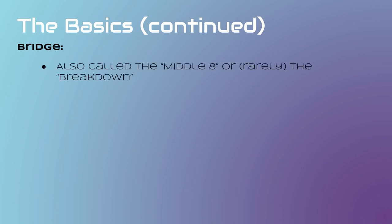The third and final basic song segment that we'll cover is the bridge. It is also sometimes called the middle eight, meaning eight bars that appear in the middle of the song, although that's somewhat incorrect. It is also rarely referred to as the breakdown, though that can also be misleading, since breakdown also describes any section of a song in which instrumentation is stripped away, or the beat becomes the focus instead of other instruments. So bridge is probably the most preferable term.